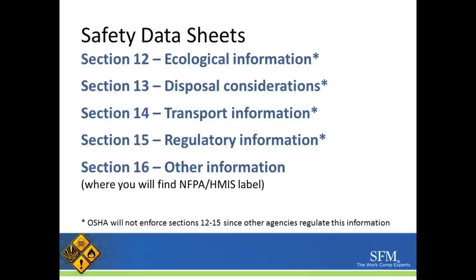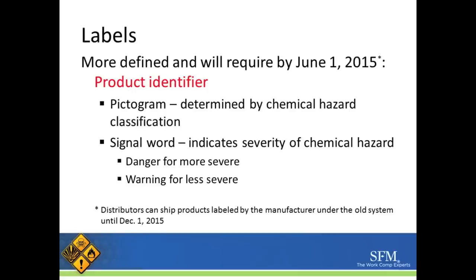Section sixteen will include any other pertinent information. One important part of GHS is the new labeling format. More will be defined and required by June 1st of 2015. Distributors can ship products labeled by the manufacturer under the old system up until December 1st of 2015.